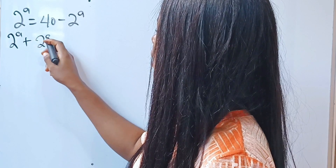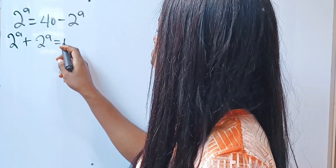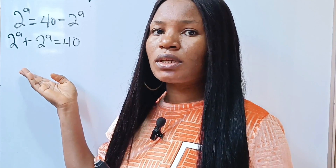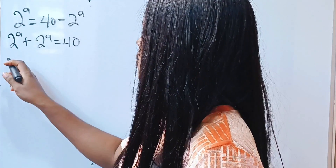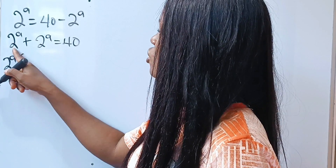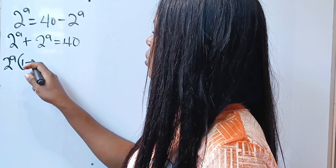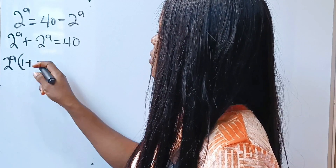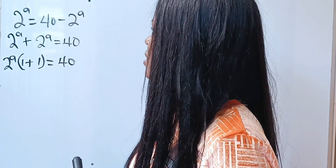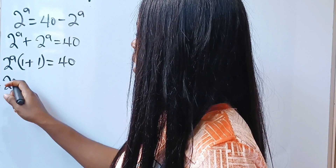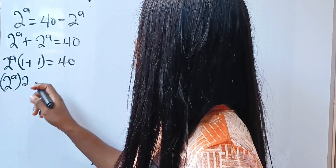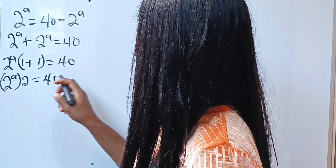So 2a plus 2a is equal to 40. Now what do they have in common? They have 2a in common, right? Let's factorize that out. 2a, we open our bracket. 2a divided by 2a will give us 1, and 2a divided by 2a will give us 1 as well. And this is equal to 40. So we have 2a multiplied by 2, is equal to 40.